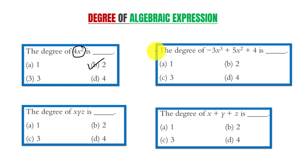Next question is the degree of -3x³ + 5x² + 4 is. Exponent of first term is 3, second term is 2, and last term is 0. So which is maximum? Definitely 3. Hence degree of this algebraic expression is equal to 3.